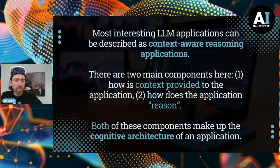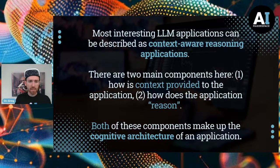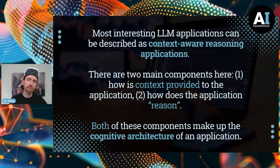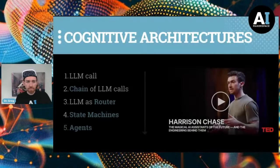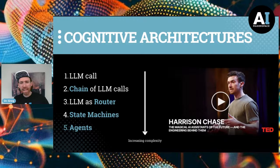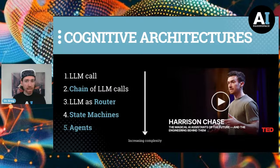The different ways to combine context and reasoning give way to cognitive architectures. Maybe there are five levels. The simplest is a single LLM call — Harrison covered this in a TED Talk from December. Beyond that, you could string a few LLMs together but still be focused on one input, one output, running through the chain. It gets more interesting when using an LLM as a router — choosing which tool, retriever, or prompt to use next.